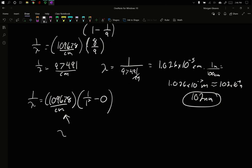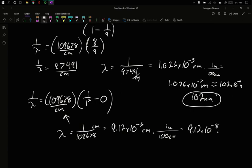Rearrange it, my lambda is going to equal 1 over 109,678, 9.12 times 10 to the minus 6 centimeters. It's 100 centimeters in 1 meter, so it's 9.12 times 10 to the minus 8 meters, or 91 nanometers. So not a lot smaller. The energy to go from 1 to 3 versus 1 to break free wasn't a very big difference in energy here.